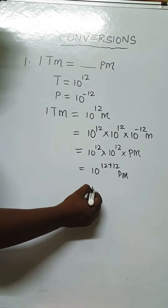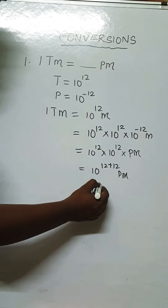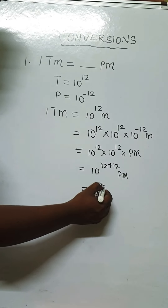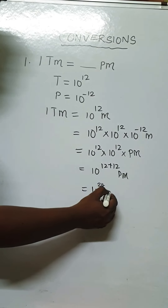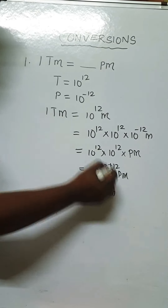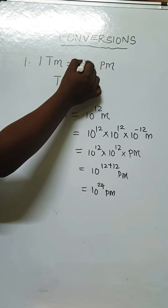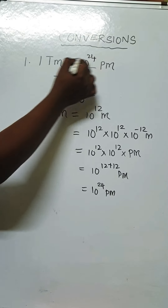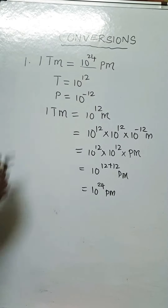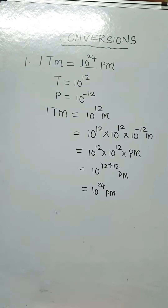10 power 12 plus 12 is 24. So, 10 power 24 is the answer. Therefore, 1 terameter is equal to 10 power 24 picometers.